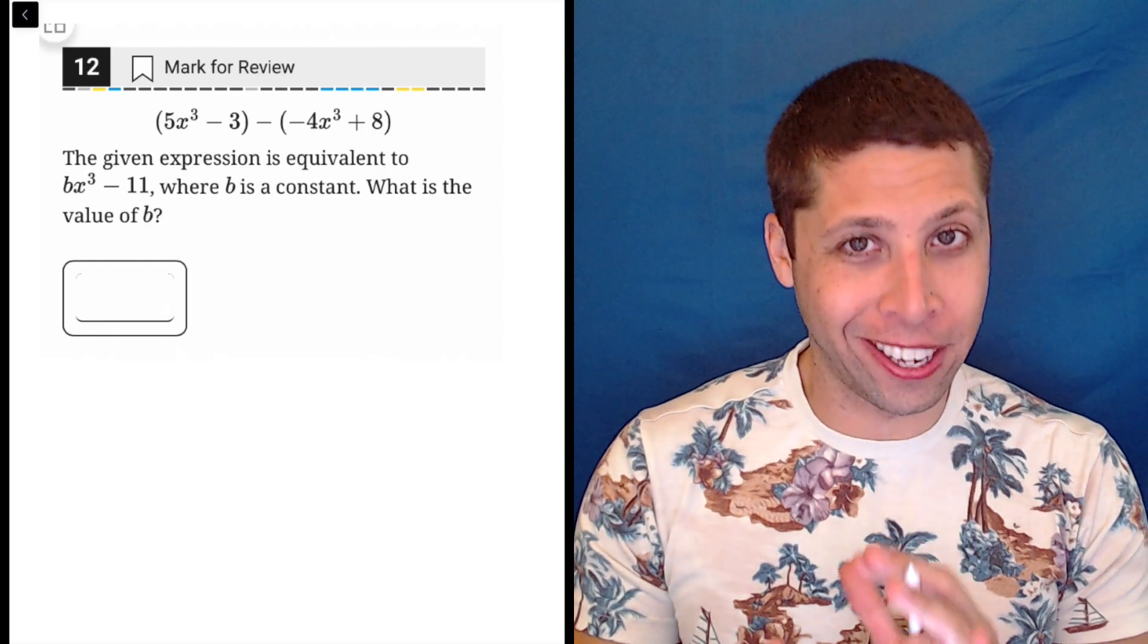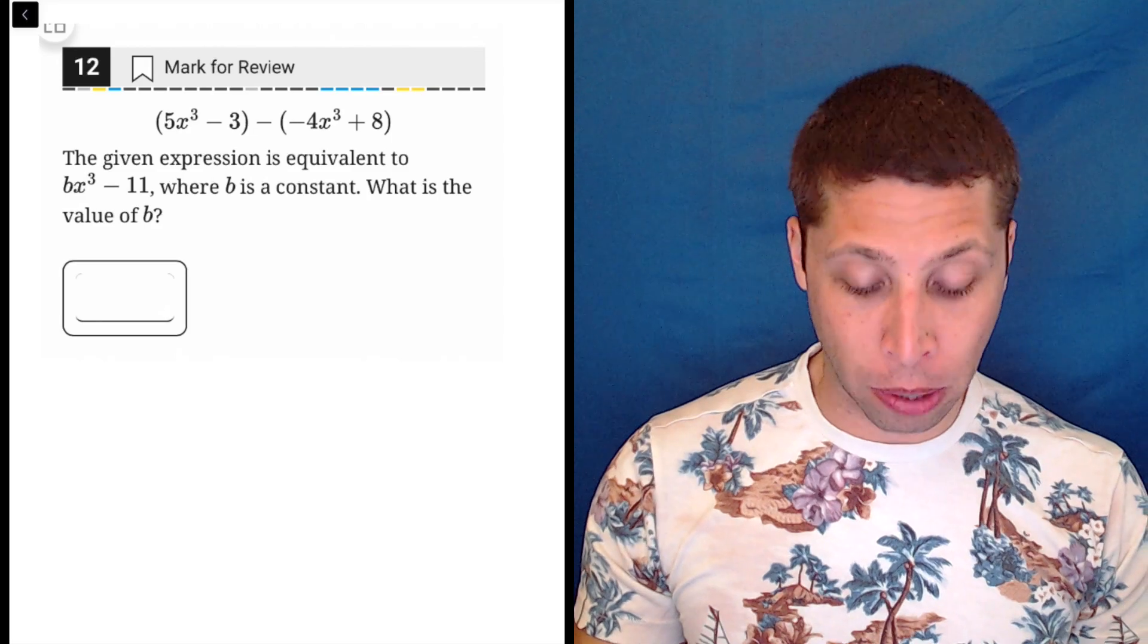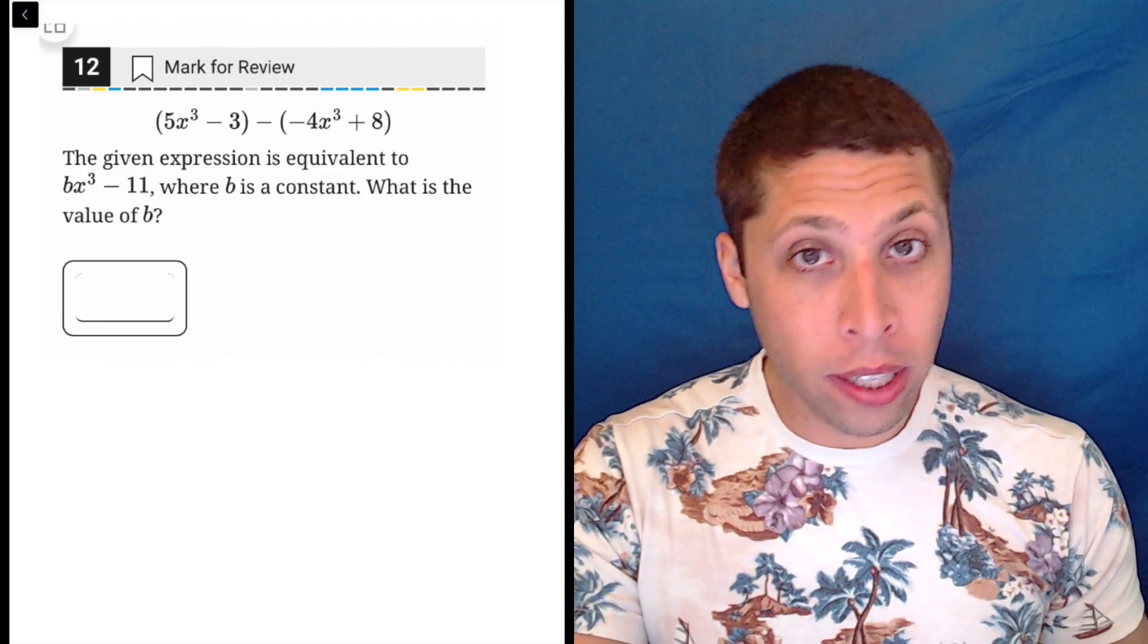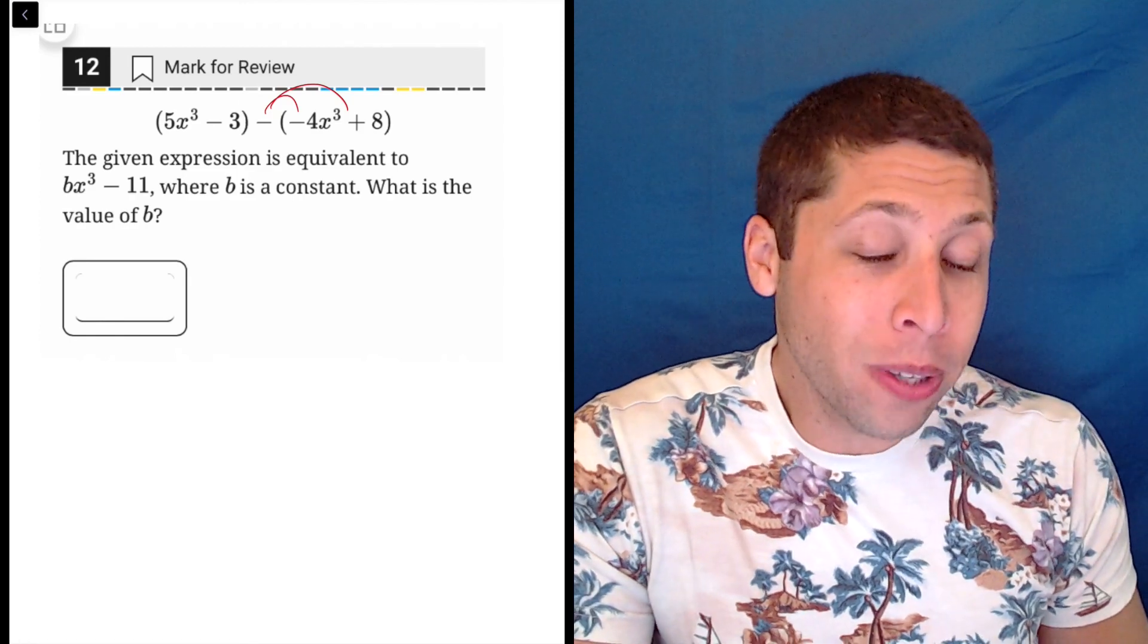The best policy on a lot of math questions is just to do the most obvious thing. We're given this original expression. We could just distribute this negative, right? Why would we do that?